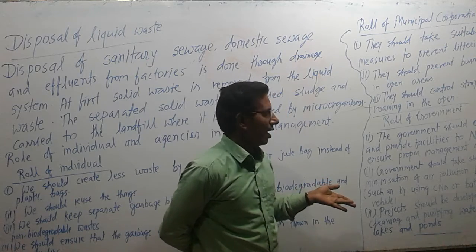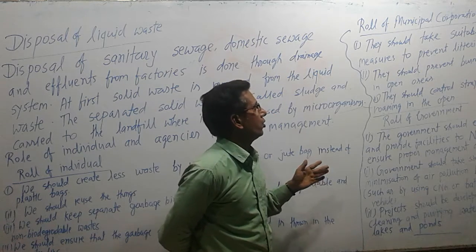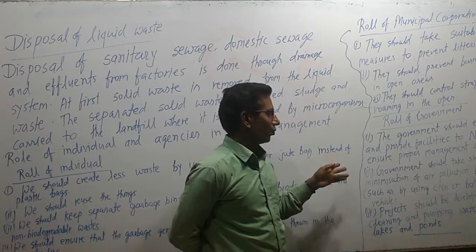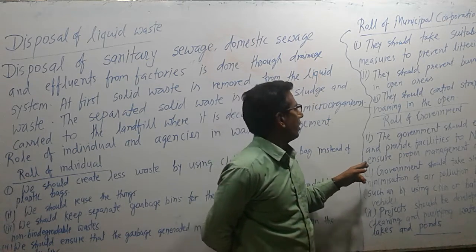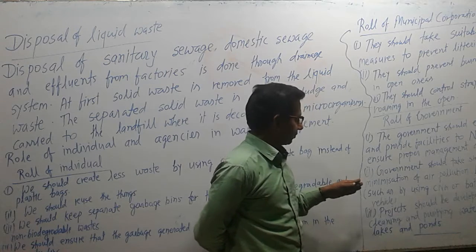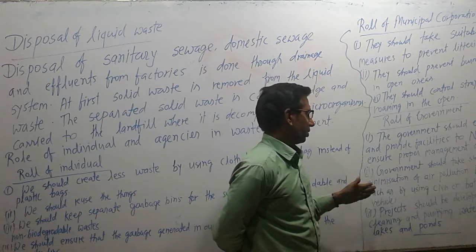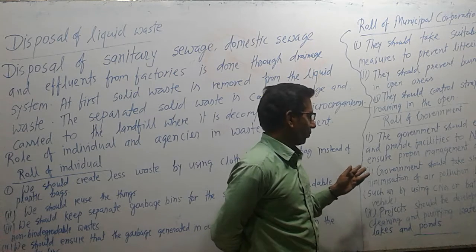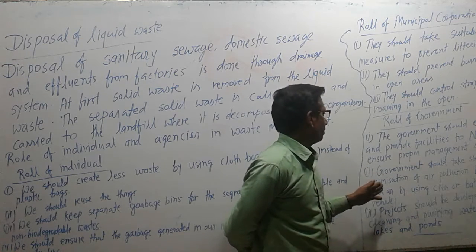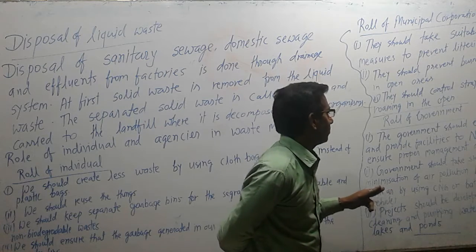We see that a lot of stray animals roam on the road and other places, so it is the duty of the municipal corporation to prevent stray animals from roaming in open areas. Now, regarding the role of government: the government should encourage and provide facilities to NGOs to ensure proper management of waste, as NGOs can do better work in the field of waste management.